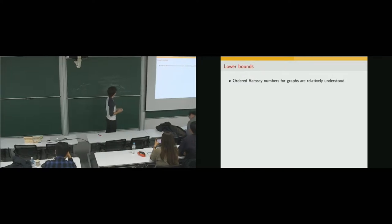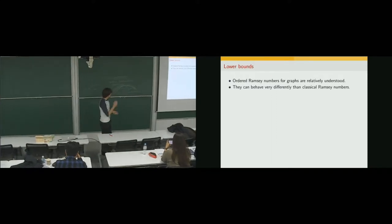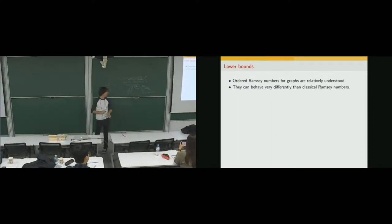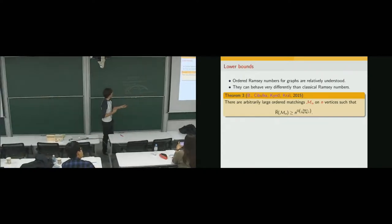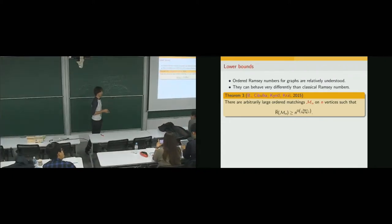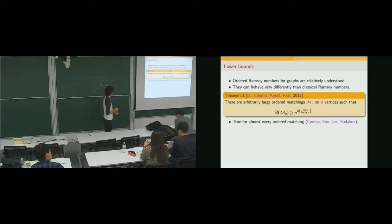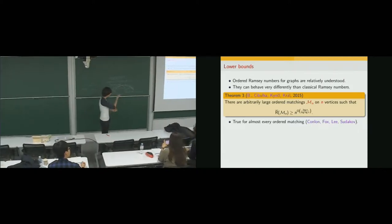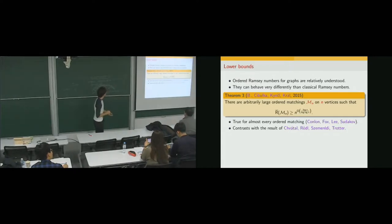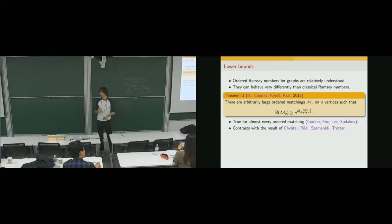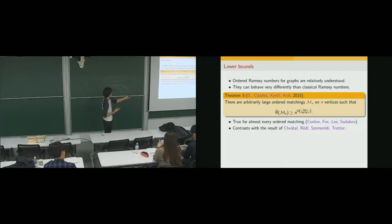Let's focus on some lower bounds. Ordered Ramsey numbers for graphs are now relatively understood and can behave very differently from standard Ramsey numbers. We showed together with Cibulka, Kynčl and Král that there are arbitrarily large ordered matchings on n vertices whose ordered Ramsey numbers grow super-polynomially in n. A matching is a 1-regular graph. This was independently shown by Conlon, Fox, Lee and Sudakov, who showed it's true for almost every ordered matching. This is in sharp contrast with the classical Chvátal-Rödl-Szemerédi-Trotter result: in the unordered setting, bounded maximum degree implies a linear upper bound, but here even maximum degree 1 gives a super-polynomial lower bound.